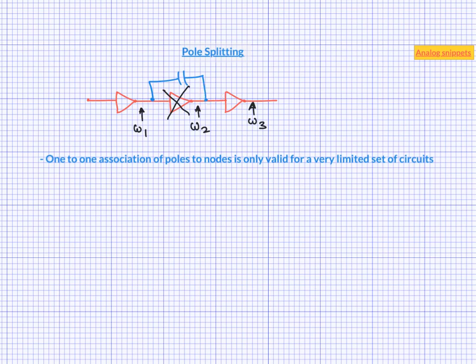As a simple example, consider the cascade of two RC circuits isolated by an ideal voltage buffer. It is a two pole system and we can confidently say that first pole is determined by R1 and C1 alone and second pole is determined by R2 and C2 alone.